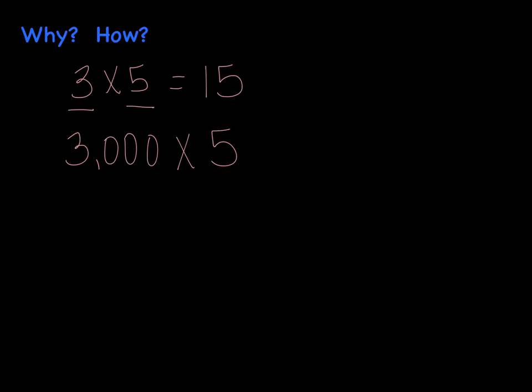So, for example, if I take the problem that I wrote underneath the 3,000 times 5, I'm going to multiply my basic fact, which is 3 times 5, which we just said equals 15. And then I'm going to count how many zeros that I have: 1, 2, 3. And I'm going to place those in my answer, which gives me an answer of 15,000.